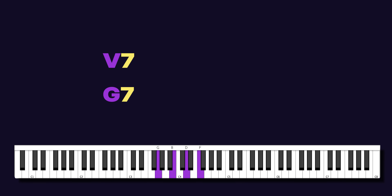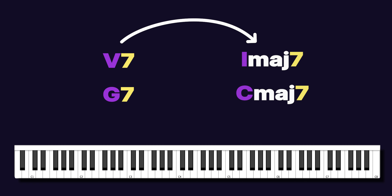Because of the circle of fifths, we already know that the five-to-one — in this case the five dominant and the one major seven — is a natural and expected resolution. But the tritone in the dominant chord pushes us even closer to wanting, and dare I say begging, to resolve to the one major.